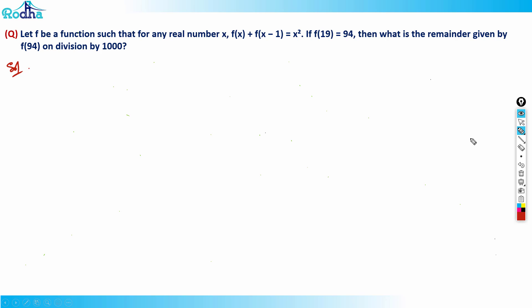Hi guys, let's look at this question — it's a very good and tough question on functions. Let f be a function such that for any real number x, f(x) + f(x-1) = x², and f(19) = 94.